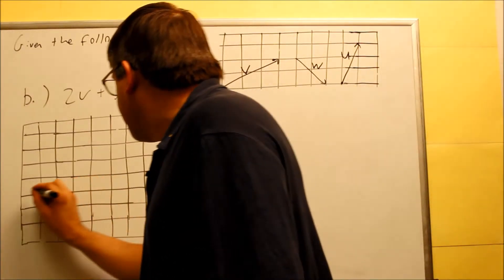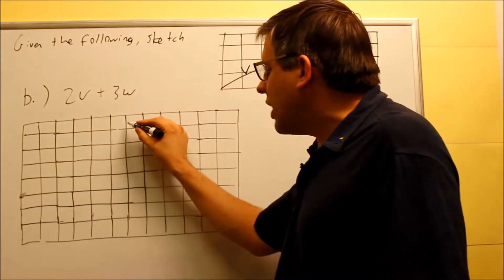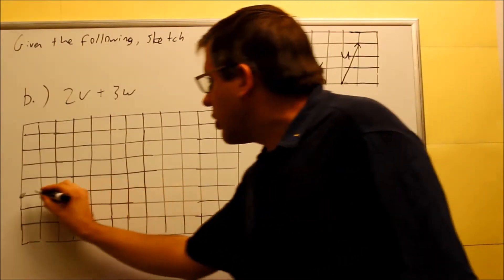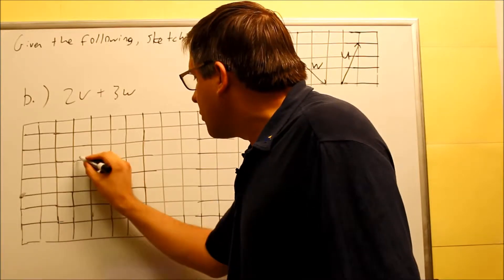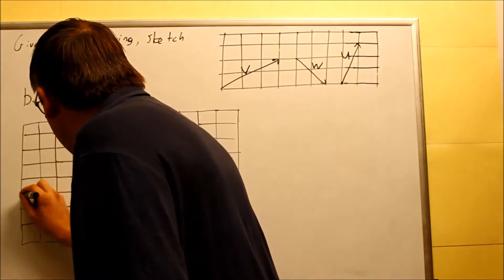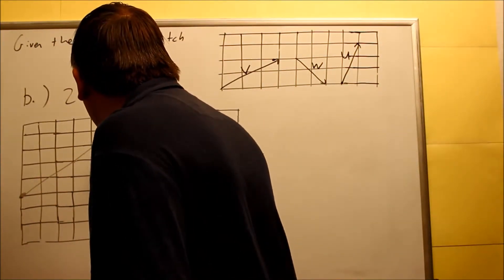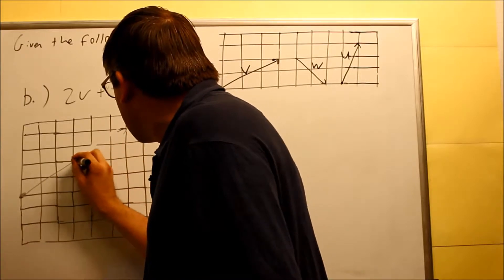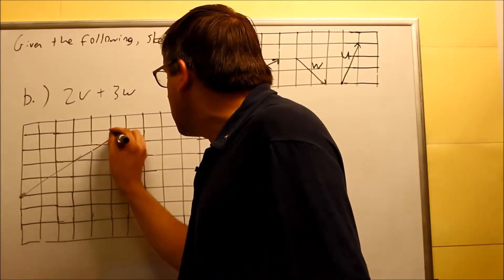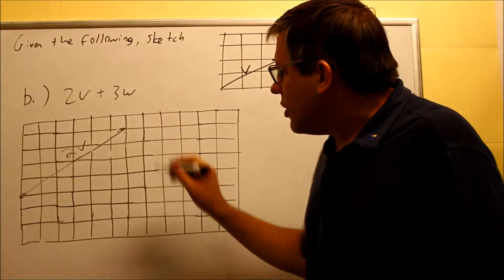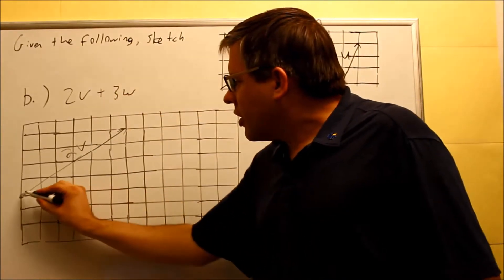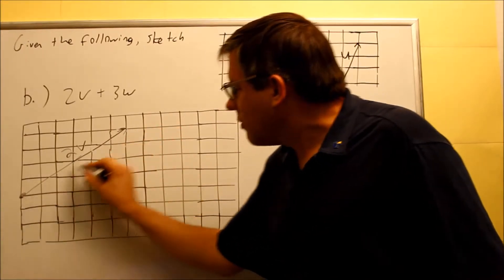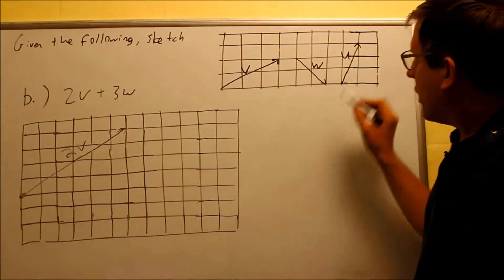I'm going to draw this in the provided grid. I'll start here so I have enough space to come back down with the 3W. Starting here, I'll draw in the 2V: over three, up two — I get that point — then over three, up two again and get this one. The ending point is right there. So I went ahead and started here, went over three, up two — that's 1V — then over three, up two again — that's the second V. That whole thing is 2V.